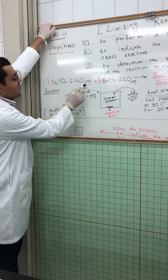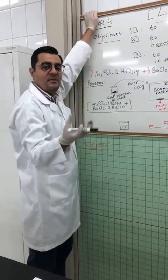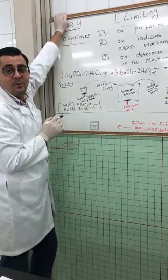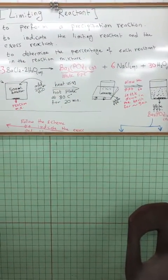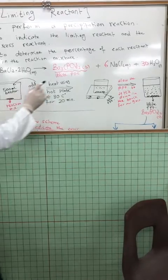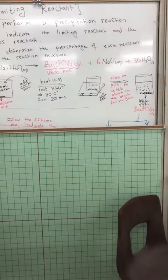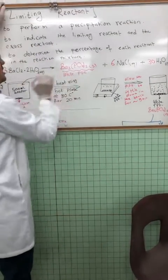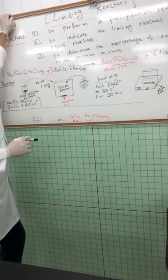As you can see, we start with two aqueous solutions — two clear solutions. Aqueous means a material that is completely dissolved in water to form an aqueous solution, so these two solutions are clear and we can see nothing. But at the end of the reaction, the white precipitate will be formed. The second product is 6 NaCl and 30 H₂O, but we don't care about these — the barium phosphate precipitate is what is important for us.